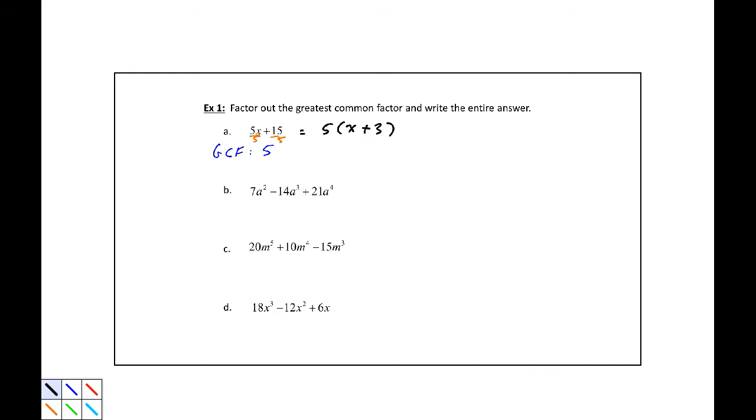For part B, factor out the greatest common factor and write the entire answer for 7a squared minus 14a cubed plus 21a to the fourth. First we want to write this in standard form. So this will be 21a to the fourth minus 14a cubed plus 7a squared. Now the greatest common factor of those three terms, well 7 divides into 21, 14, and 7. I think that's actually the largest number.